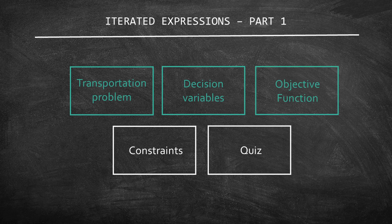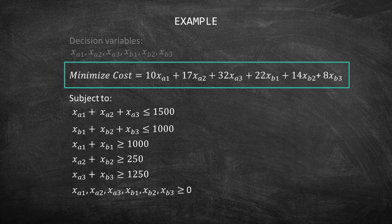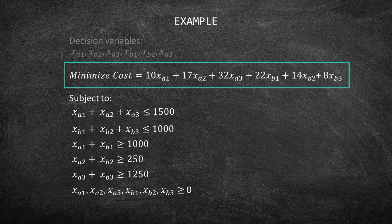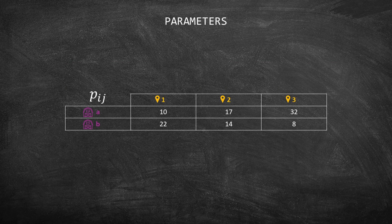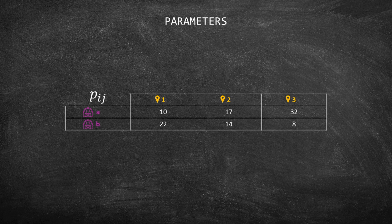The objective function is to minimize the cost of 10 xA1 plus 17 xA2 plus 32 xA3 plus 22 xB1 plus 14 xB2 plus 8 xB3. As I mentioned, the transportation costs can be represented in a table. Each value in the table is going to be replaced by the letter p with its indexes. For instance, PA1 represents the cost from supplier A to customer 1, which is 10, PA2 is 17, PA3 is 32, and so on.